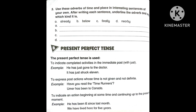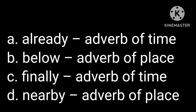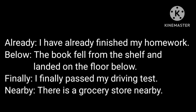Number Three: Use these adverbs of time and place in interesting sentences of your own. After writing each sentence, underline the adverb and say which kind it is. Sample sentences: 'I have already finished my homework' (adverb of time). 'The book fell from the shelf and landed on the floor below' (adverb of place). 'I have finally passed my driving test' (adverb of time). 'There is a grocery store nearby' (adverb of place).